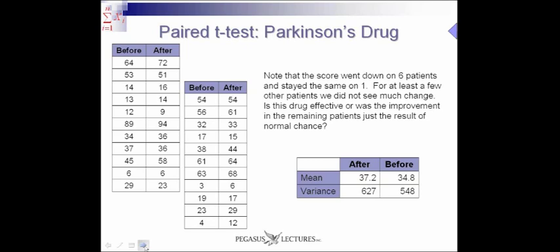What you see in this table is that in some cases the before and after went up, and sometimes it went down — it seems to be going in all different directions. So did the drug have an effect or not? We could look at the means: the mean before was 34.8 and the mean afterwards was 37.2. How significant is that? Maybe a difference of three points is huge, or maybe it means very little. And if we look at the variance, we see a larger variance after than before, which may further indicate that it's just the normal spread from day to day and not really the effect of the drug.